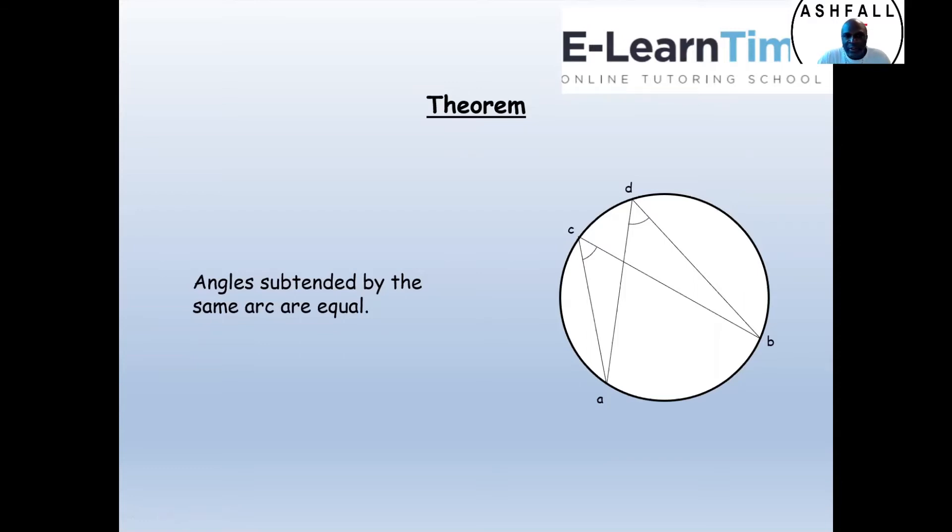Previously we've looked at angle at the center is twice the angle at the circumference and angles in the semicircle is 90 degrees at the circumference. Today we're going to look at angle subtended by the same arc are equal.